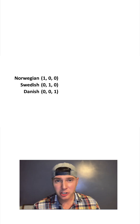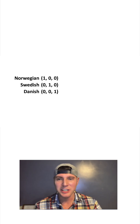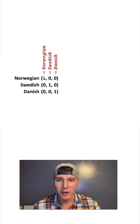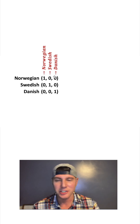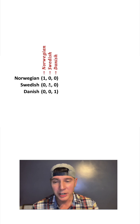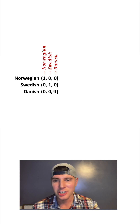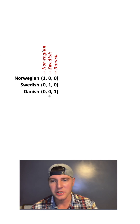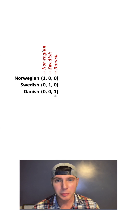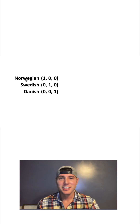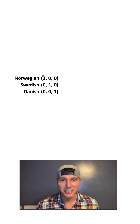In math terms, I'm going to express them like this. This person is 100% Norwegian, 0% Swedish, 0% Danish. This person is 0% Norwegian, 100% Swedish, 0% Danish. And this person is 0% Norwegian, 0% Swedish, and 100% Danish. This is just the math code for the breakdown of their heritage.